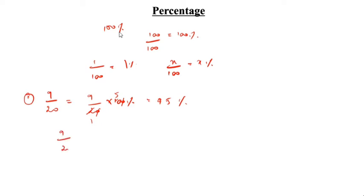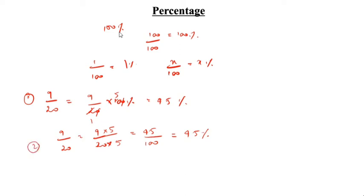Second method: 9 by 20. You need to find which number multiplied by 20 gives 100. You have to write 5. Denominator multiplied by 5 means numerator also multiplied by 5. So, 9 5s are 45, divided by 20 into 5 is 100. So, 45 by 100 is equal to 45 percentage.